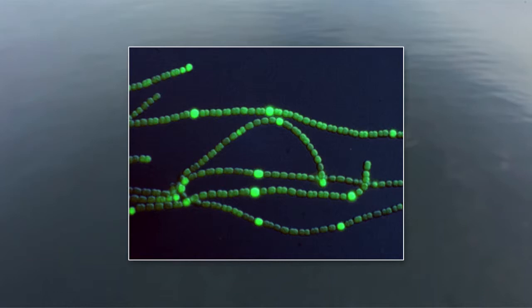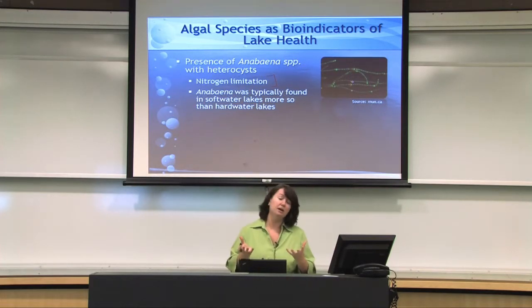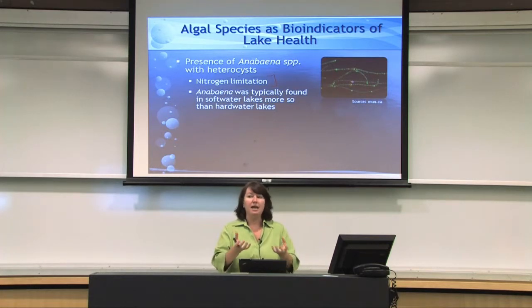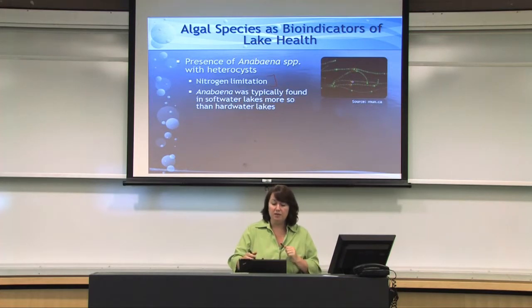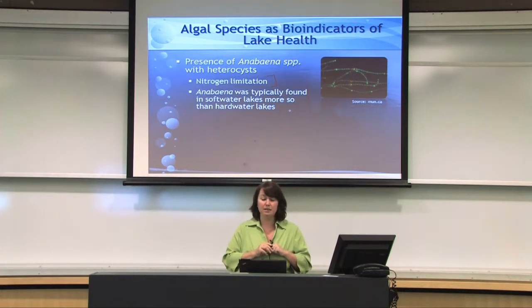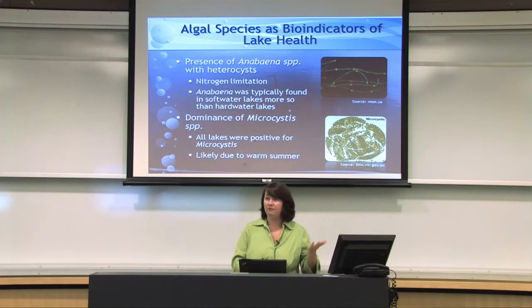Anabaena seemed to be an important taxon in soft water lakes. When Anabaena shows up — particularly with heterocysts, those larger specialized cells visible under the microscope — we know the lake is likely nitrogen-limited, because Anabaena can fix nitrogen: converting gaseous atmospheric nitrogen into nitrate for growth. Finding Anabaena raises a red flag for nitrogen limitation. We found it statistically more prevalent in soft water lakes than hard water lakes, making it a bioindicator of nitrogen limitation.